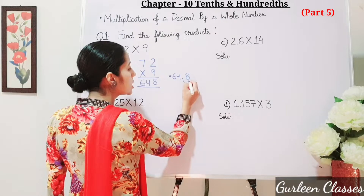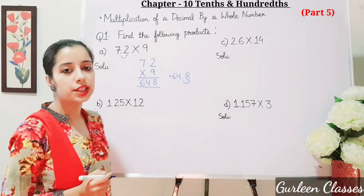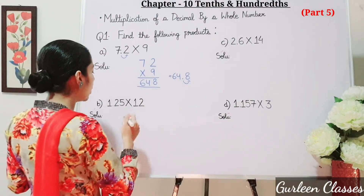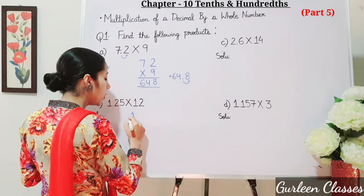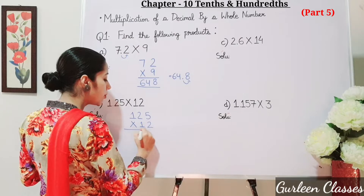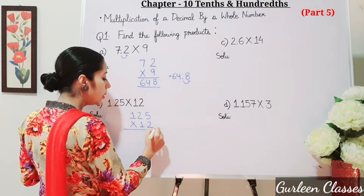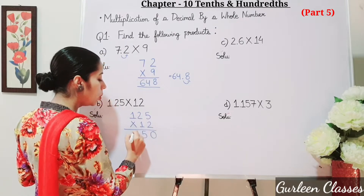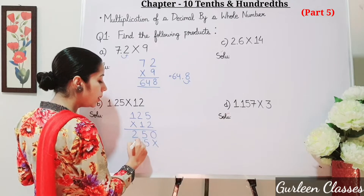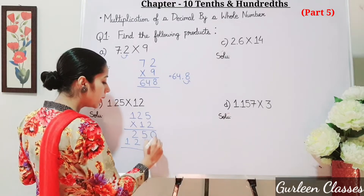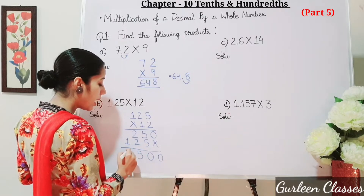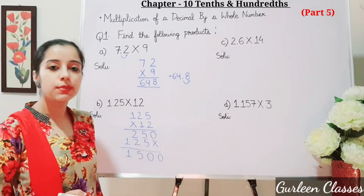So in the answer also, after the decimal point, there is only 1 digit. Now part b: 1.25 into 12. So multiply without the decimal point: 125 into 12. 5 twos are 10, 2 twos are 4 plus 1 is 5, 2 ones are 2, 1 fives are 5, 1 twos are 2, 1 ones are 1. So the result is 1500.